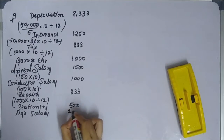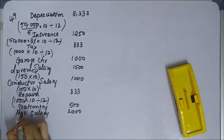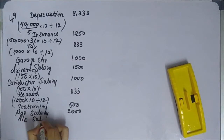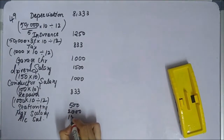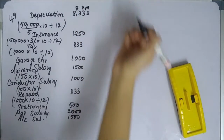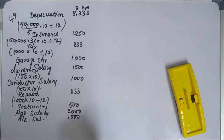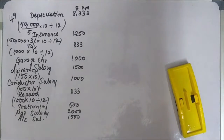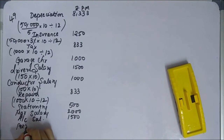Manager salary is 2,000 per month. Next is accountant salary, which is 1,500 per month. Next is petrol and oil.